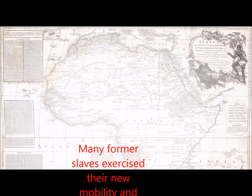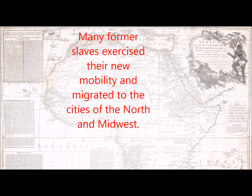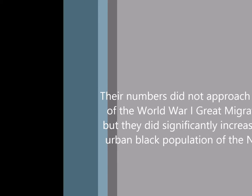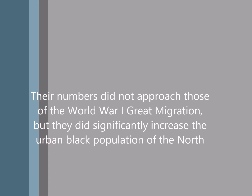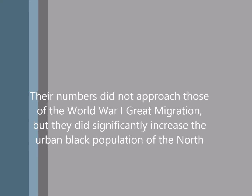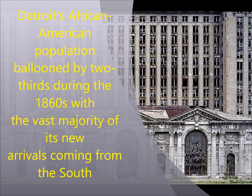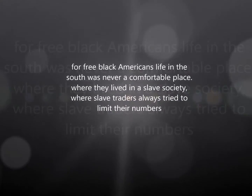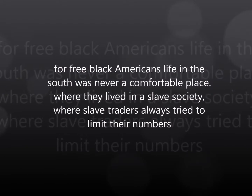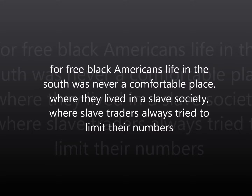Many former slaves exercised their new mobility and migrated to the cities of the North and Midwest. Their numbers did not approach those of the World War I Great Migration, but they did significantly increase the urban black population of the North. Detroit's African American population ballooned by two-thirds during the 1860s, with the vast majority of its new arrivals coming from the South. For free black Americans, life in the South was never a comfortable place, where they lived in a slave society and slave traders always tried to limit their numbers.